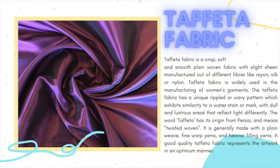Taffeta fabric. Taffeta fabric is a crisp, soft, and smooth plain-woven fabric with a slight sheen, manufactured out of different fibers like rayon, silk, or nylon. It is widely used in manufacturing woven garments. Taffeta has a unique ripple or wavy pattern which exhibits similarity to a water stain or mark, with dull and lustrous areas that reflect light differently. The word taffeta has its origin from Persia and means twisted woven. It is generally made with a plain weave, fine warp yarns, and heavier filling yarns. A good quality taffeta fabric represents the art in an optimum manner.